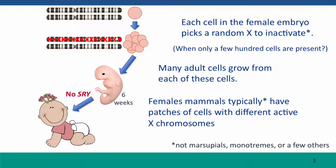Some cells will inactivate the X chromosome inherited from the mother — the maternal X chromosome. Some cells will inactivate the paternal X chromosome. I'm a little vague about exactly when this happens because my colleagues who are experts in this field tell me they still don't know exactly when this happens, but it's probably at a time when only a moderate number of cells are present, maybe only a few hundred cells. And then from each of these cells, each of which has inactivated a different X chromosome, many adult cells grow, forming patches of cells with different X chromosomes inactivated in the developing fetus.